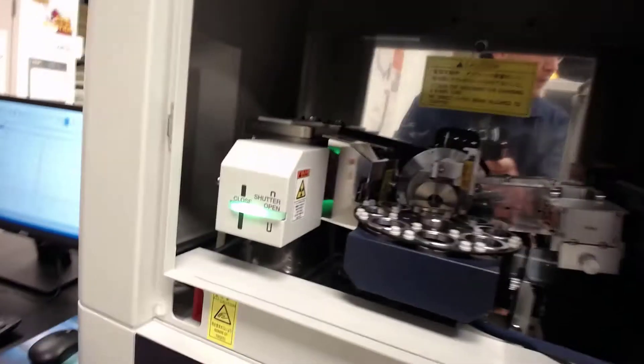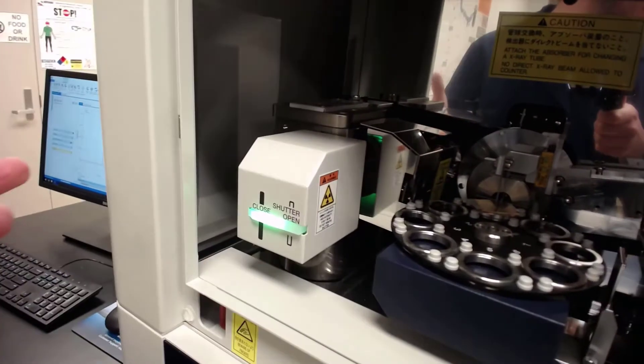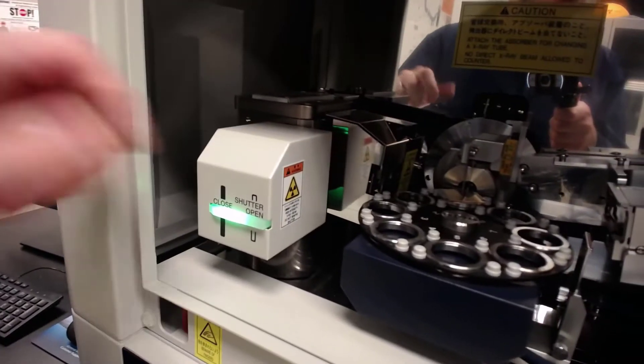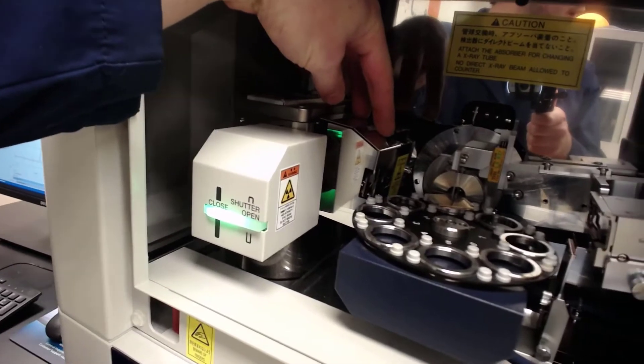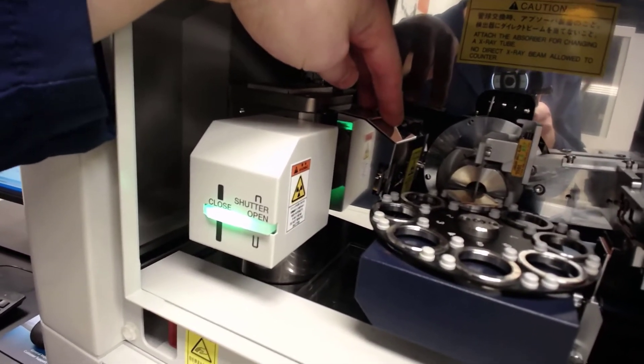Looking inside the system itself, we have our X-ray tube over here on the left. There's nothing really to see there, just so you know where the source is. There's a number of slits that are built into the system that constrain the size of the X-ray beam.